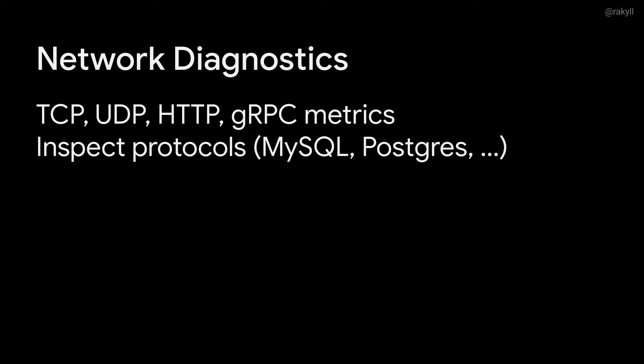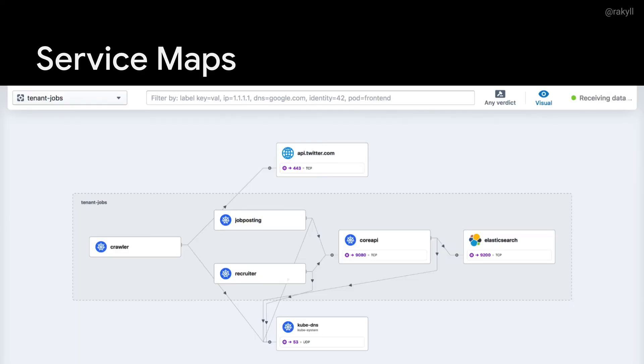So how does eBPF help exactly? eBPF events from networking layers can be converted into out-of-the-box telemetry — TCP, UDP, HTTP, gRPC metrics or events are possible to collect without any code changes. You can also inspect text and binary protocols such as database requests and responses. By relying on out-of-the-box network telemetry, it's possible to generate service maps without any code changes. This is an example from Cilium and Hubble — it automatically collects and visualizes the service map in a Kubernetes cluster.